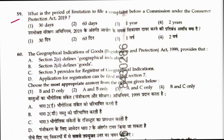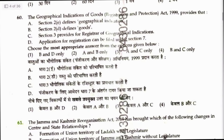Question 59: What is the period of limitation to file a complaint before a commission under the Consumer Protection Act? That is two years. Answer is 4. The provision is Section 69 of the Consumer Protection Act 2019.